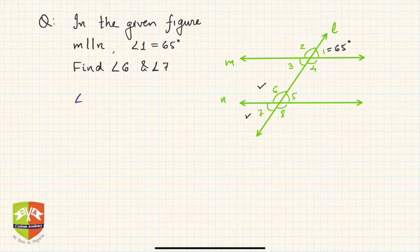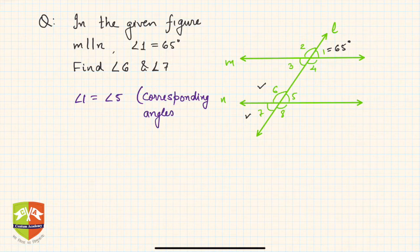So hence we say angle 1 is equal to angle 5 and these are corresponding angles. That means angle 5 is also equal to 65 degrees because angle 1 was 65 degrees.